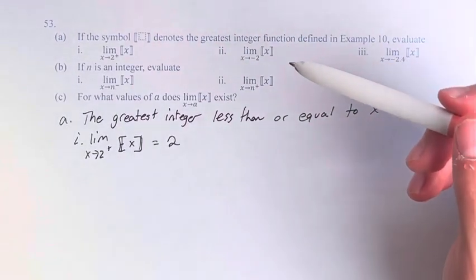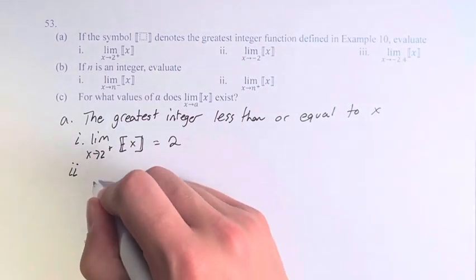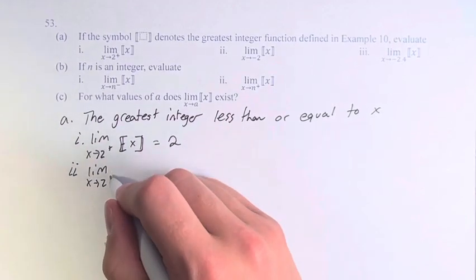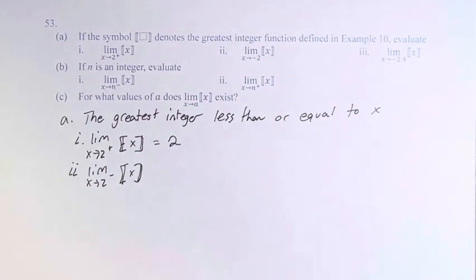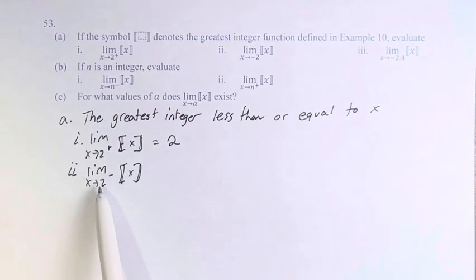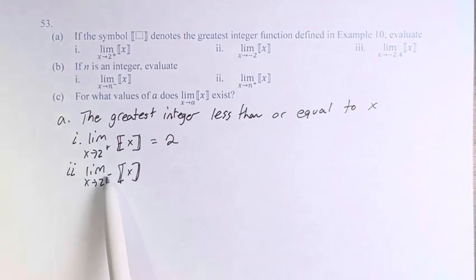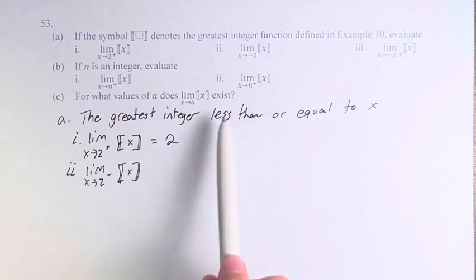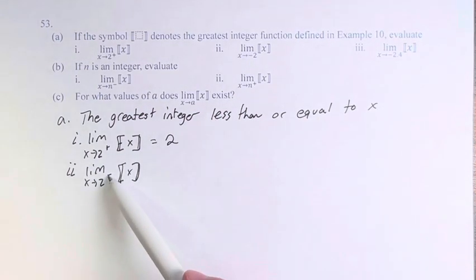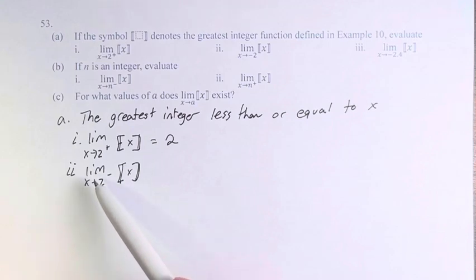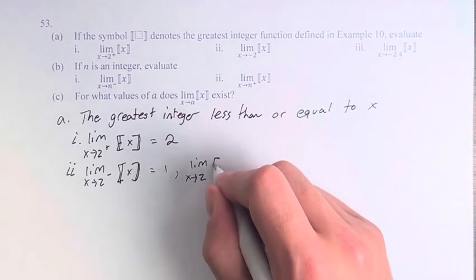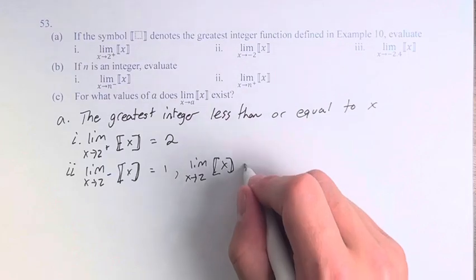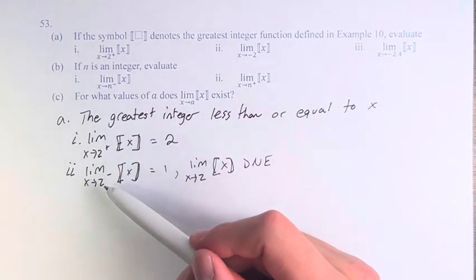Meanwhile, if we are looking at the general limit as x approaches 2, we first have to understand the limit from the left. From the left, we have numbers that are less than 2 approaching 2, which means the greatest integer less than or equal to them is not 2. They're not quite at 2 yet — this is like 1.9999999, and the greatest integer less than or equal to 1.99999 is 1. Therefore the limit as x approaches 2 does not exist because the left and right limits don't agree.